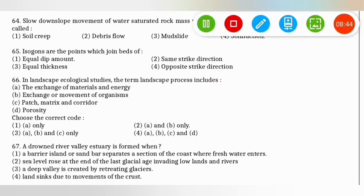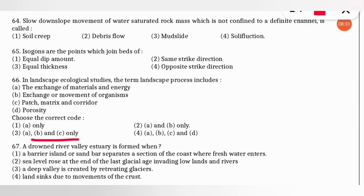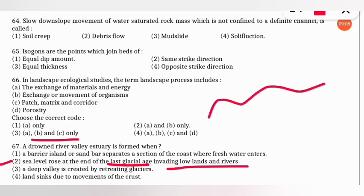The next question: a drowned river valley estuary is formed when? The correct option is B — when sea level rose at the end of the last glacial age, invading lowlands and rivers, creating a drowned river valley estuary.